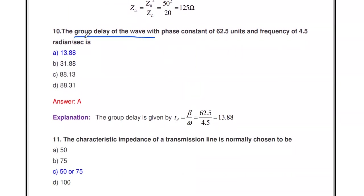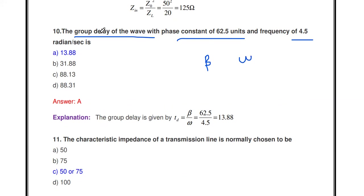Find the group delay of a wave with phase constant β = 62.5 and angular frequency ω = 4.5 radians per second. The group delay formula is Tg = β / ω. Substituting: 62.5 / 4.5 = 13.88. So the group delay is 13.88.